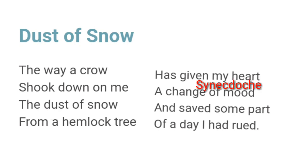In the second stanza, the poet uses synecdoche. What is synecdoche? Synecdoche is a figure of speech which suggests a part representing the whole. Look at the first two lines of the second stanza: 'Has given my heart a change of mood.' Does the poet want to suggest that only the heart was changed? No. His whole personality experienced a change — his entire person experienced a change. So it is a synecdoche. Heart has undergone a change of mood; however, it is not just the heart but his entire person that is experiencing a better mood.